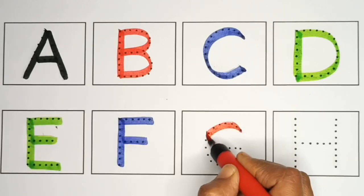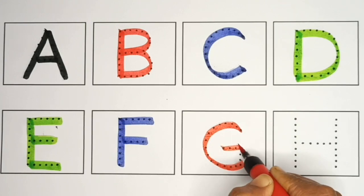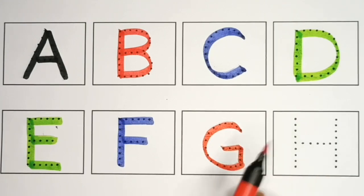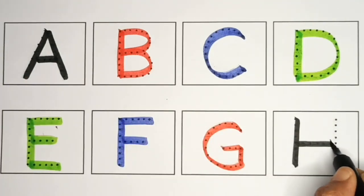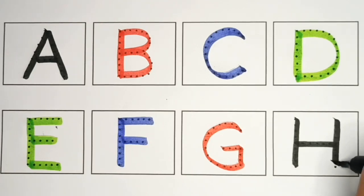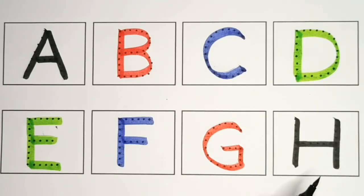G, G for Grapes. Red colour, G. H, H for Hen. Black colour, H. Thank you.